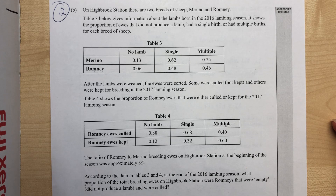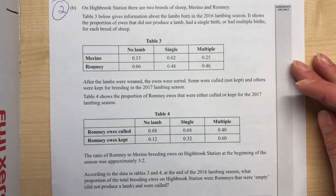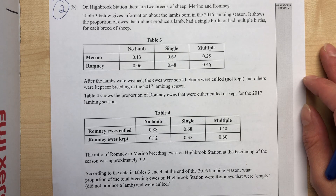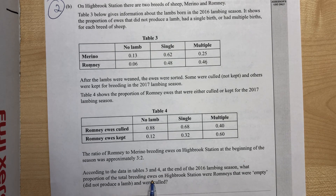So how do we go about answering this? This is actually a little bit of a red herring question — there is a lot going on, a lot of information given to you, but the question itself is actually pretty easy. According to the data in tables three and four, what proportion of the total breeding ewes were Romneys that were empty and were culled?